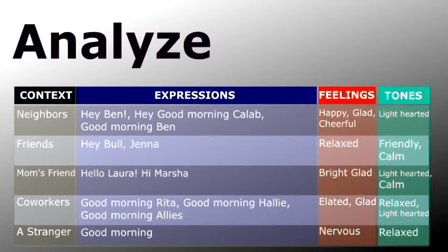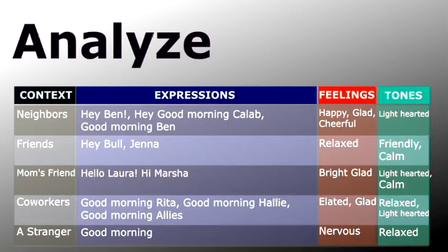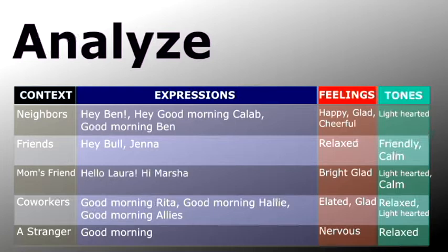Here's the analyzing part. We're going to compare the details and maybe a little bit more about the expressions, feelings, and tones we've just seen, to figure out what similarities and differences they have, so we can understand how greetings are generally done in English. First, expressions. As you can see, these expressions are very easy — you must have learned them as an elementary school student. But even here, there's something you need to pay attention to. When they greeted each other, they included the name of the person they greeted, whoever they were, except in the last scene where the guy greeted a stranger. So we can learn that it's more natural to include the name of the person we greet. Please remember that point.